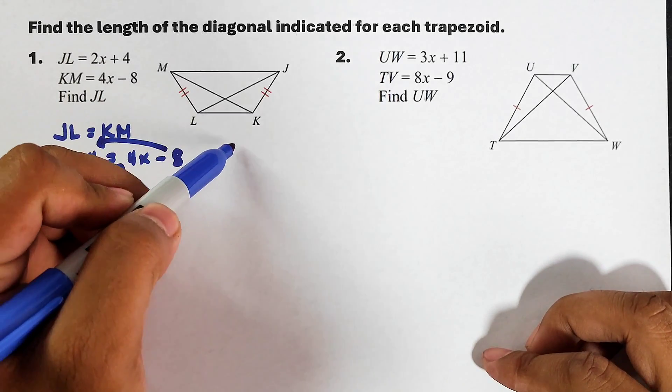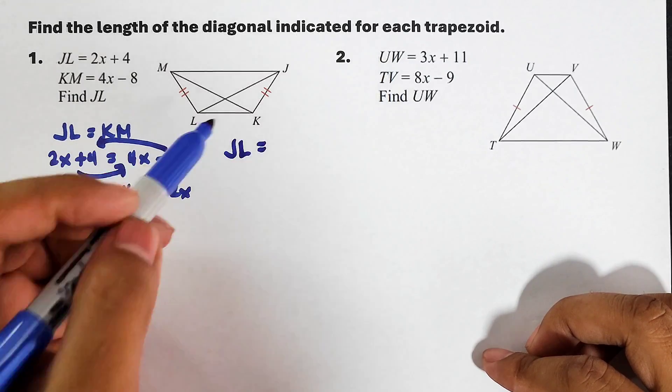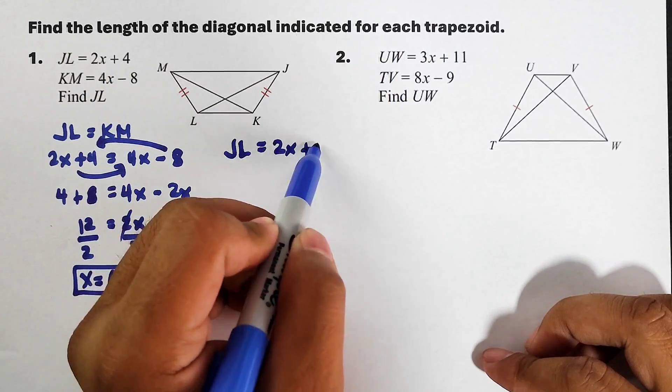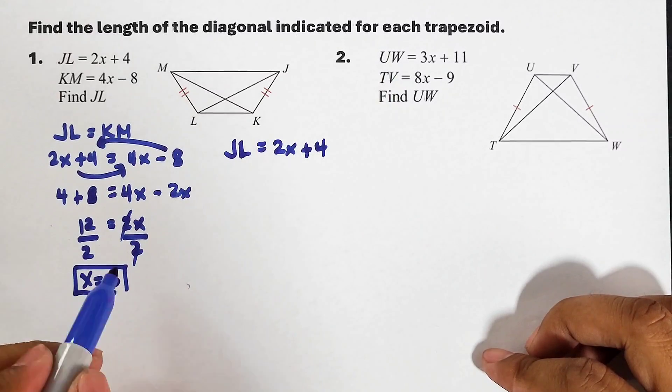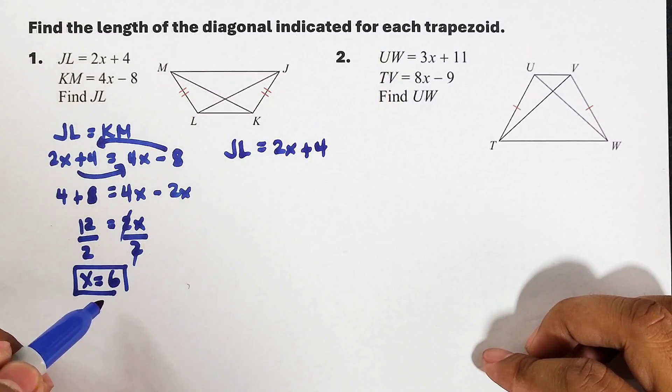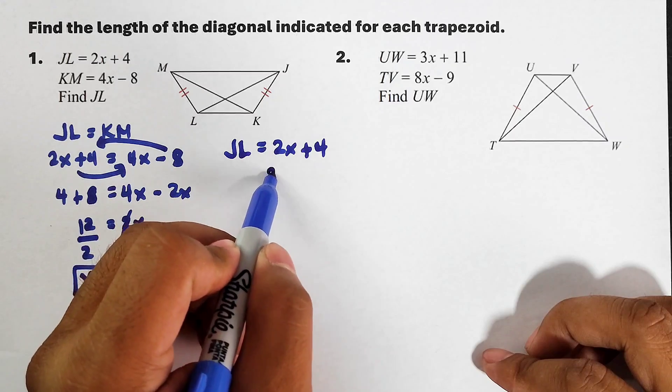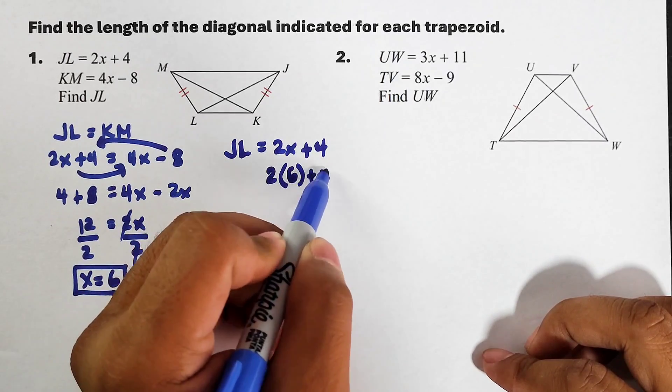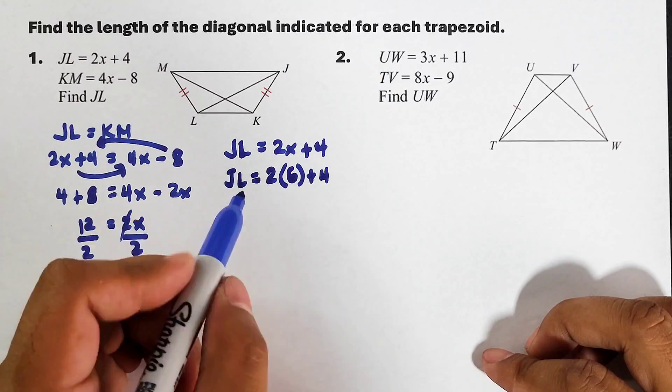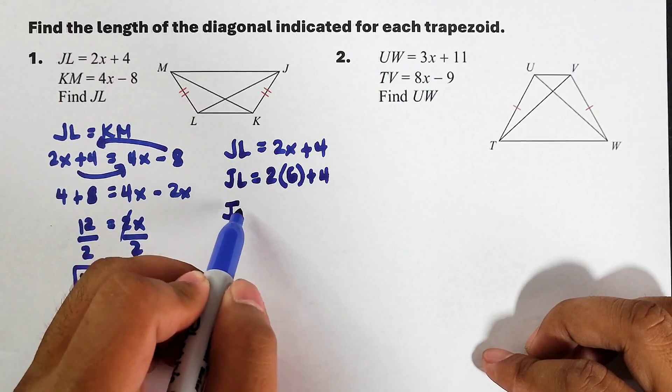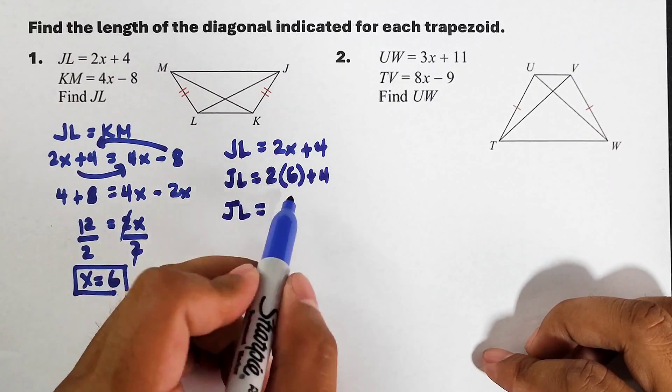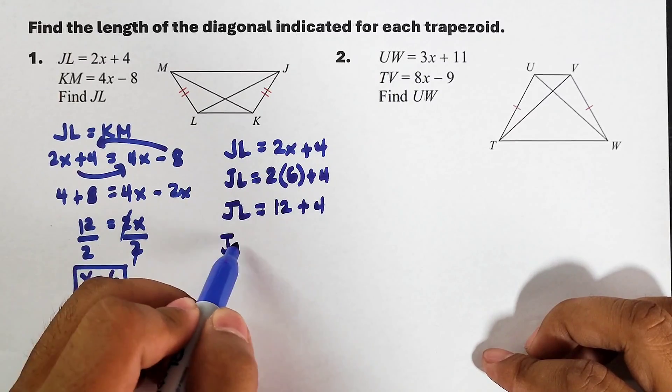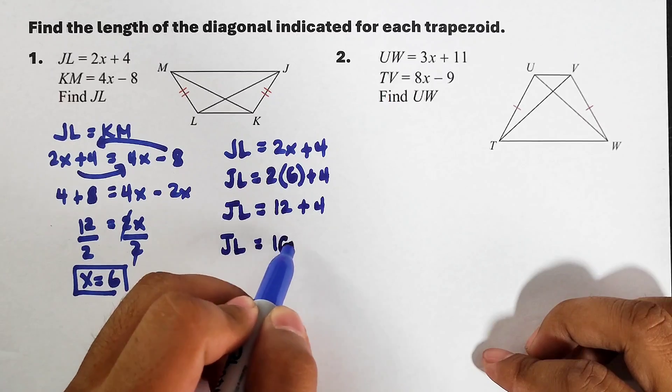But we are asked for JL. Our JL is represented by 2x plus 4. To find it, substitute x here. It will become 2 times 6 plus 4, and for the JL, this is 12 plus 4. Then as you can see, our JL is equal to 16.